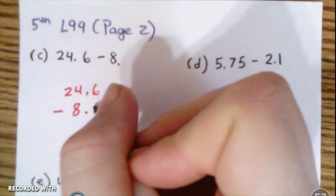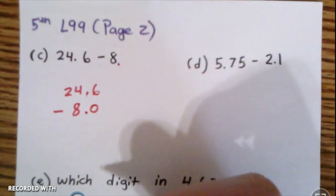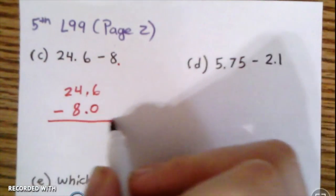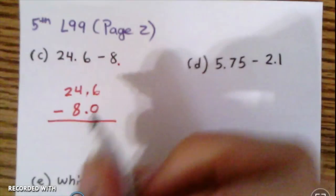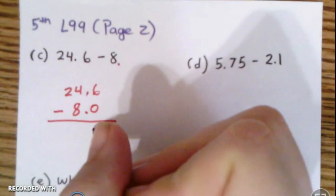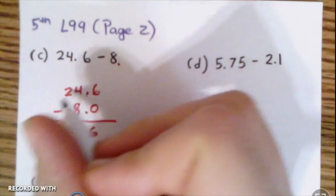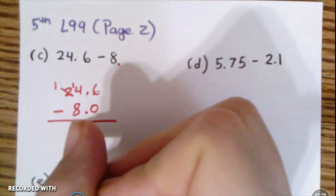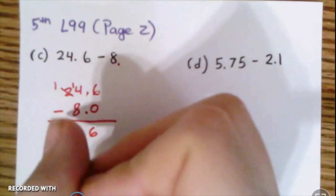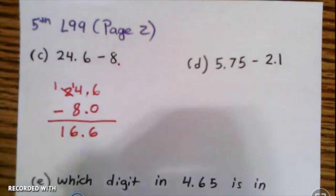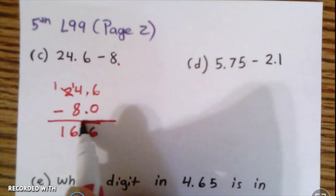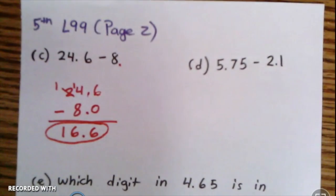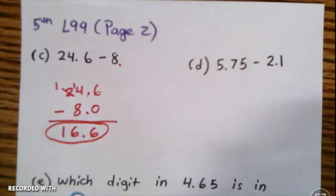Now I'm going to add a zero there so the same amount of decimal places are being used in both numbers, and now we'll subtract. 6 minus 0, 4 minus 8—I'm gonna borrow—14 minus 8 is 6, 1 minus 0 is 1. So our final answer is 16.6, or 16 and 6 tenths.